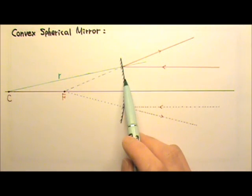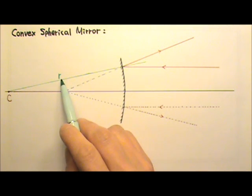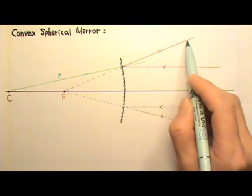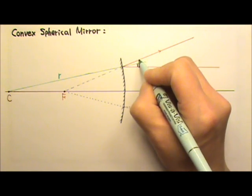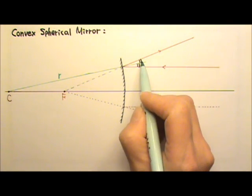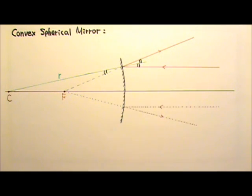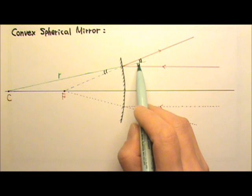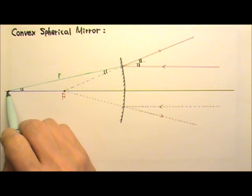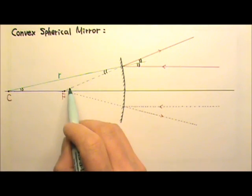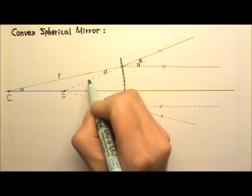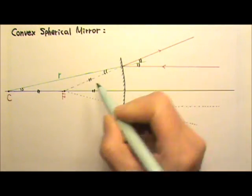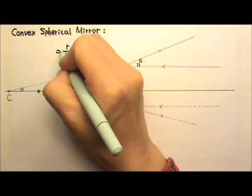The radius is always perpendicular to the surface of the sphere, so the radius is the normal line. This means the reflected ray follows the law of reflection: the angle of incidence equals the angle of reflection. This angle equals the angle opposite it, and because this ray is parallel to the principal axis, those angles are also equal. So we have an isosceles triangle again. If this is a small mirror, these sides are equal, and we again get that half the radius equals the focal length.